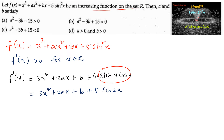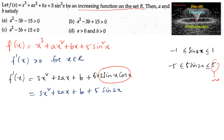We know that for any real number x, sin2x lies between -1 and +1. Similarly, 5sin2x lies between -5 and +5. So the maximum value of 5sin2x is 5 and the minimum value is -5.